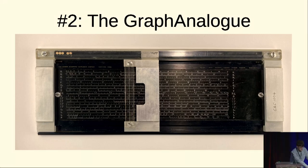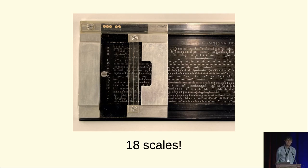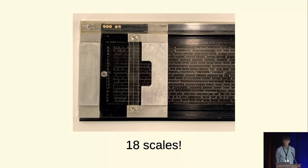The second one is this one. This is called the graph analog and it's kind of a ridiculous deluxe edition of the variable scale. It's the same idea but it has 18 different marked scales on it to do all kinds of fairly obscure different graphical tricks.